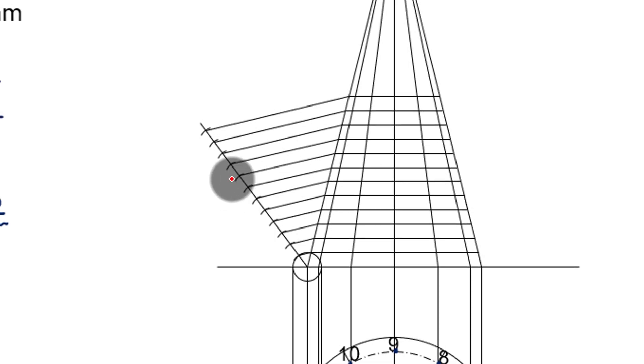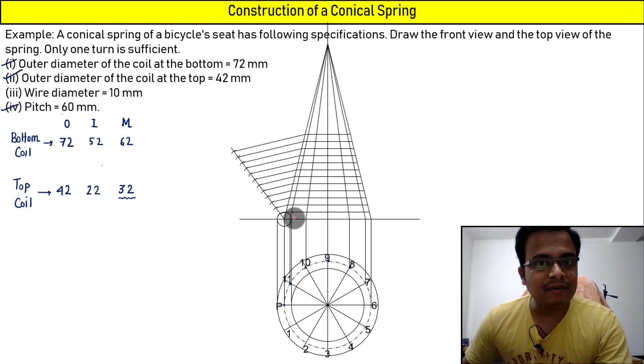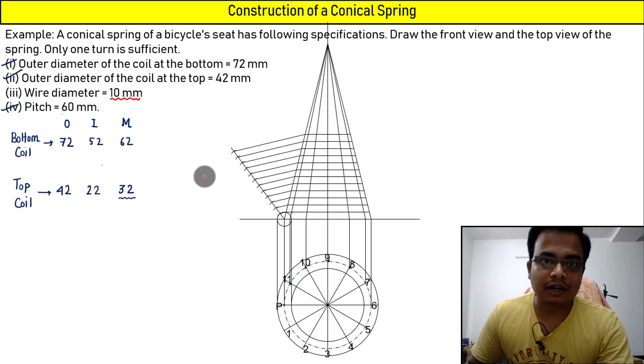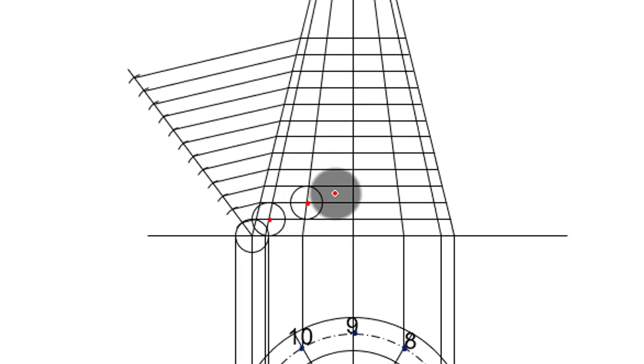So what's the next thing to do? Taking this as the center, draw a circle having diameter equal to 10 millimeter, that is wire diameter, or radius as 5 millimeters. Then with this as center, draw another circle.